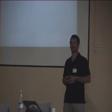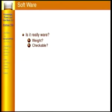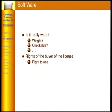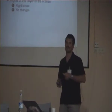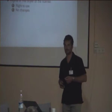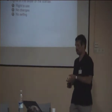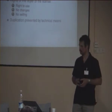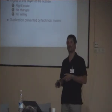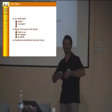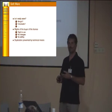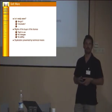What about software? Does software have a weight, or is it truly checkable by the people buying it? In most cases, a buyer of software has only the right to use it — he is not the owner. In many cases he has no right to change the software, and sometimes he is not even allowed to sell it, because he has only the license to use it. Duplication of software is easy, but is prevented by artificial technical means not needed for the software's functionality.